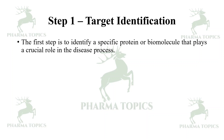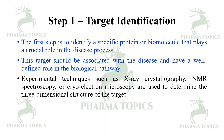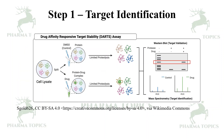The first step in structure-based drug discovery is to identify a specific protein or biomolecule that plays a crucial role in the disease process. The target should be associated with the disease and have a well-defined role in the biological pathway. Experimental techniques such as X-ray crystallography, NMR spectroscopy, or cryo-electron microscopy are used to determine the three-dimensional structure of the target. It can also be identified by biochemical assays, cell-based assays, or microarray technology, and then validated.